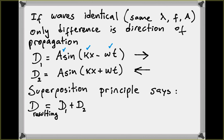The superposition principle — and this is the most important concept to understand from this chapter — says that when two waves propagate in a medium, the displacement that wave 1 would produce if it were alone, plus the displacement that wave 2 would produce if it were traveling alone, gives the total displacement when they travel together in the same medium.